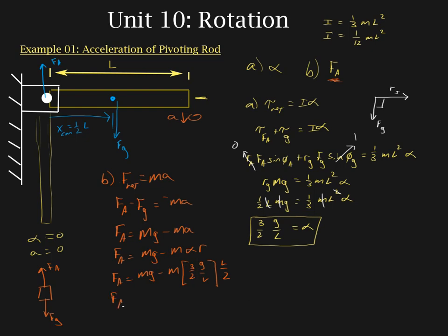So now we just have to clean it up. So the applied force is equal to Mg minus, we have this L cancels with this L. And this 2 multiplies with that 2. So we're going to have 3 fourths Mg. So we have F applied is equal to Mg minus 3 fourths Mg, which is just 1 fourth Mg. So the force that's applied by the bracket to the end of the rod is equal to 1 fourth the weight of the rod itself.